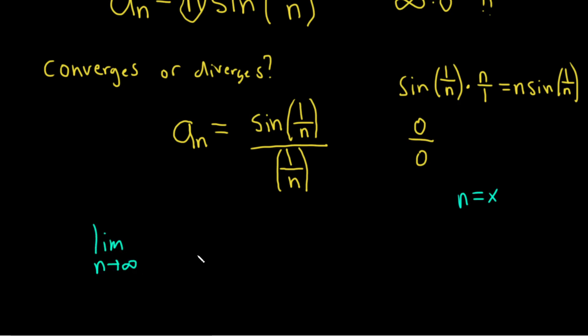So we'll let n approach infinity, and we have the sine of 1 over n over 1 over n. And L'Hopital's rule says that whenever you have 0 over 0, that's one of what's called an indeterminate form, you simply take the derivative of the numerator and the derivative of the denominator.